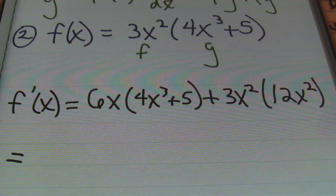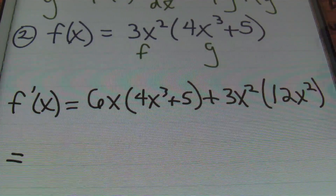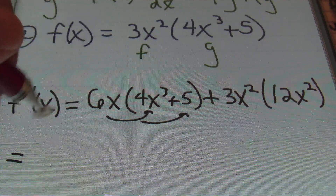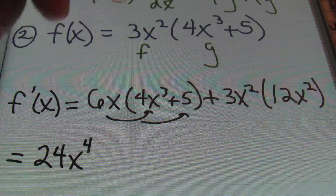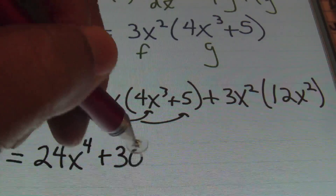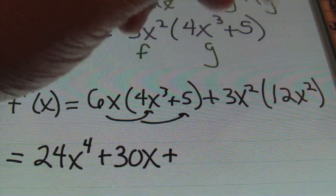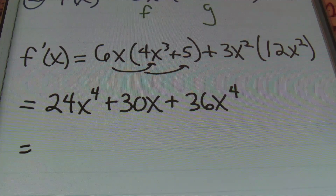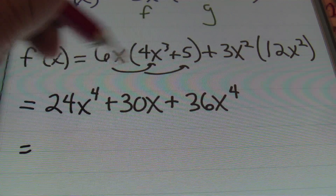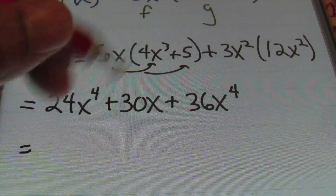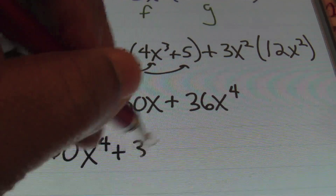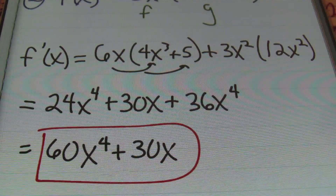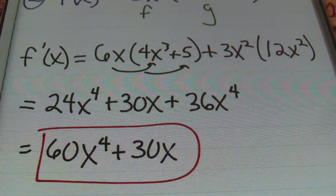Notice that the calculus aspect of this problem is already done. We've already found the derivative; we just need to simplify it and write it in descending order of our variable. So I'll be distributing: 6x times 4x cubed gives me 24x to the fourth power, then 6x times 5 is 30x, plus 3x squared times 12x squared is positive 36x to the fourth power. Combining like terms: 24x to the fourth plus 36x to the fourth gives me 60x to the fourth power plus 30x. And that's the answer — 60x to the fourth power plus 30x, done.